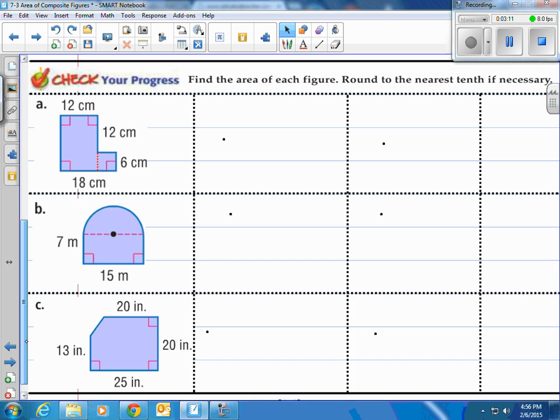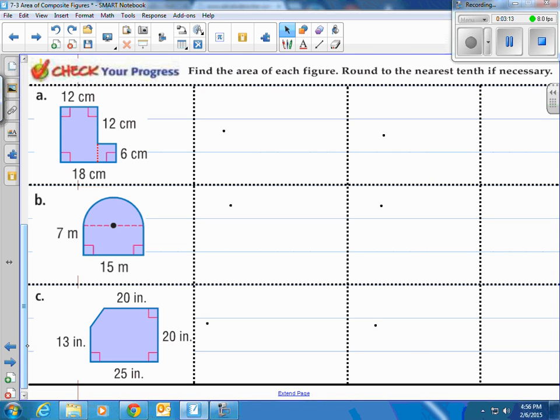All right, take a look at these three. Try them on your own quickly on paper, and then come on back and check them out and see how you do against what I do. All right, it says find the area of each figure. So these are all composite figures. They're made up of different figures put together, and we're going to round to the nearest tenth if we need to.